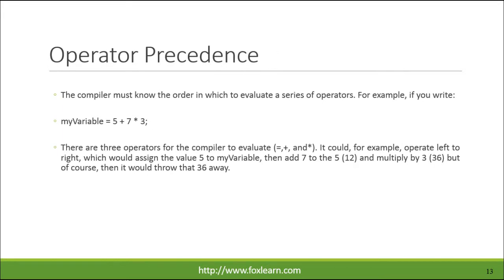The compiler must know the order in which to evaluate a series of operators. There are three operators for the compiler to evaluate: =, +, and *. It could, for example, operate left to right, which would assign the value 5 to myVariable, then add 7 to the 5 (12), and multiply by 3 (36), but then it would throw that 36 away.